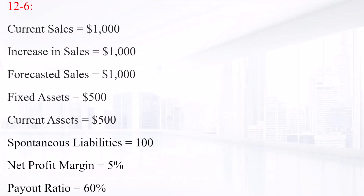Here is the December 31st, 2010 balance sheet. Cash, accounts receivable, inventories, and net fixed assets are given, with total assets of 1,000. Accounts payable, notes payable, accruals, long-term debt, common stock, and retained earnings are also given, totaling 1,000.